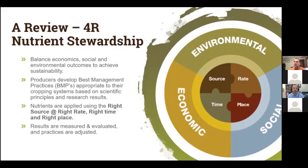4R has four components: the source, rate, time, and place of nutrient application. They all need to be right together, and they have large impacts not only on the nutrient use efficiency of the crop and the crop yield, but also on the environmental impact. A final principle of sustainability includes measuring and evaluating results to adjust practices — an adaptive style of management. Maybe you too are more sustainable than you think.